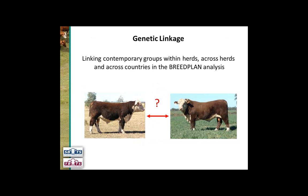Now let's talk about genetic linkage. Breedplan is very careful only to compare calves with other contemporary calves treated the same. For it to compare groups of calves born on the same property in different contemporary groups, or on different properties, it's critical to have genetic linkage — common genetics across those groups. This can apply across herds and also across countries in multi-country Breedplan analyses.